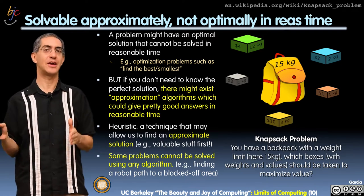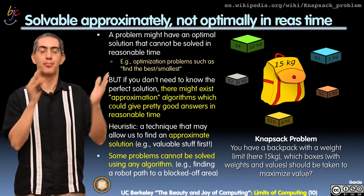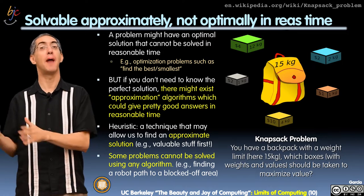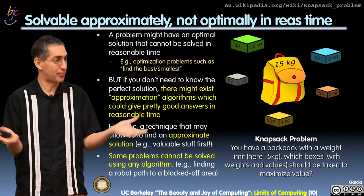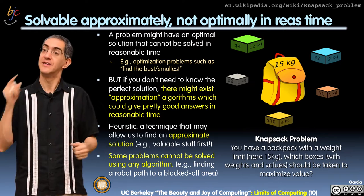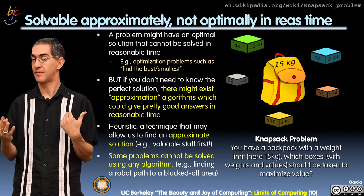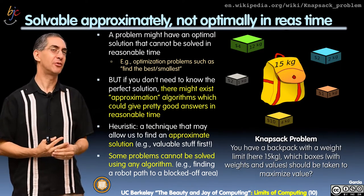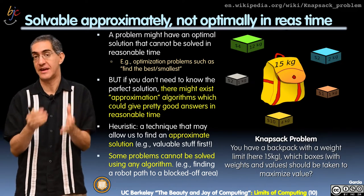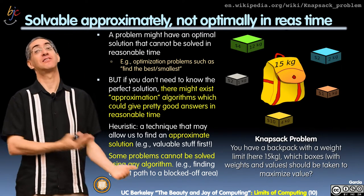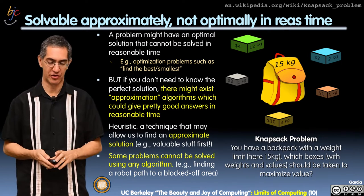The next category of problems is solvable approximately, but not optimally in reasonable time. So of the set of intractable problems — things that we just can't solve — some of them have pretty good approximate solutions, and we're pretty happy with that. We don't have to have exactly the right answer; we can tap into those approximating algorithms and get a pretty good solution.